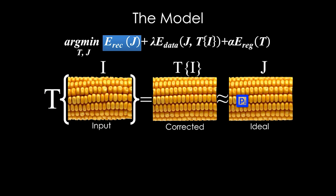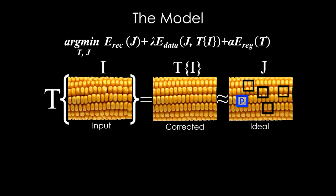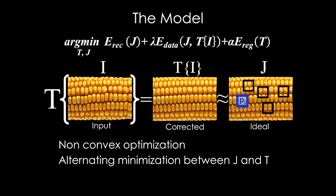The first term, the recurrence term, aims to make every patch in j as similar as possible to many other patches. The second term, the fidelity term, aims to make the transformed input image similar to j. The last term is a smoothness term on the transformation's parameters. This results in a non-convex optimization problem that we solve using alternating minimization between the transformation and the ideal image.